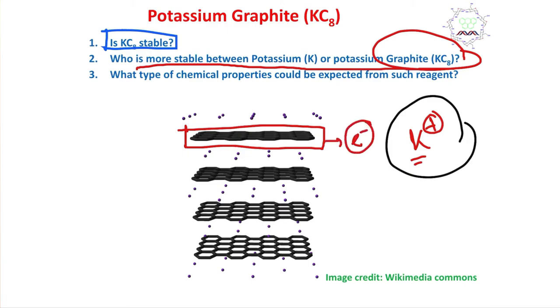In this case, K plus does not get stability, but the electron gets stability because it is in the conjugated network of graphite. Since it's an electron reservoir, if you pour more electrons to the reservoir, the conjugated network or band structure doesn't reflect much, but color changes and chemical properties change.